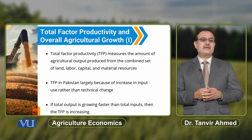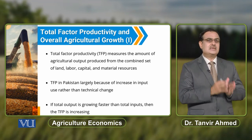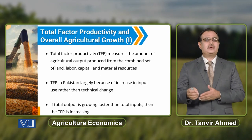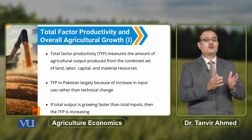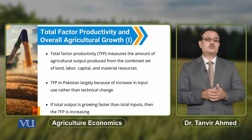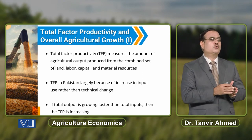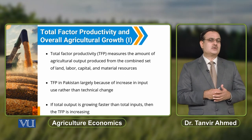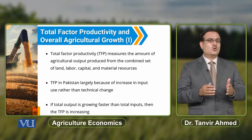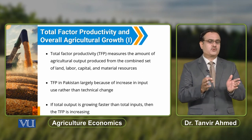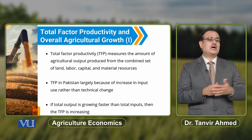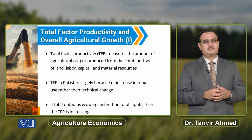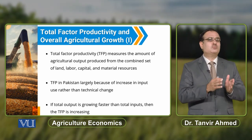When we talk about total factor productivity measurement, it is basically the amount of agricultural output produced from the combined sets of land, labor, capital, and material resources. Production depends upon factors of production — output is a function of input. If there is an increase in output beyond the increase in input, then we can say that there is an increase in productivity.